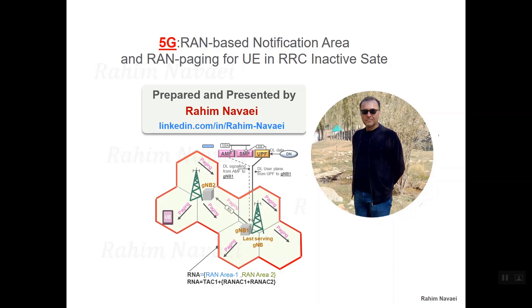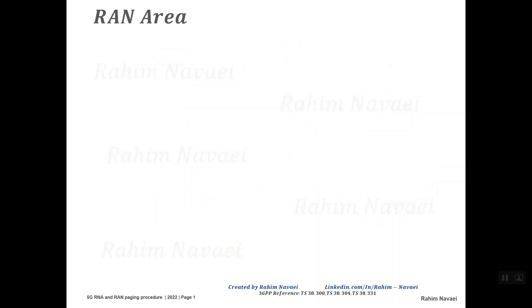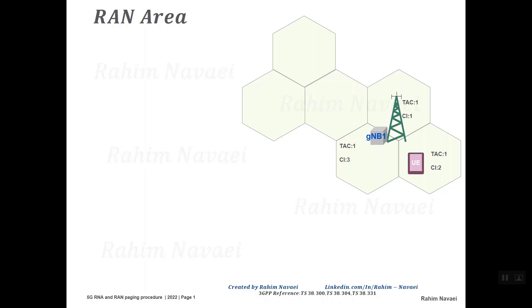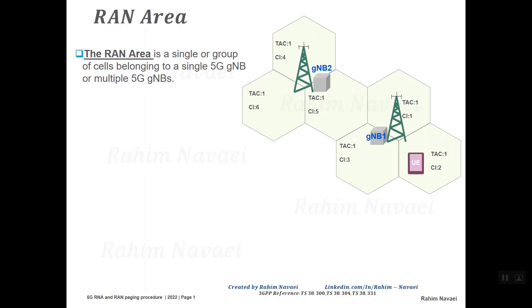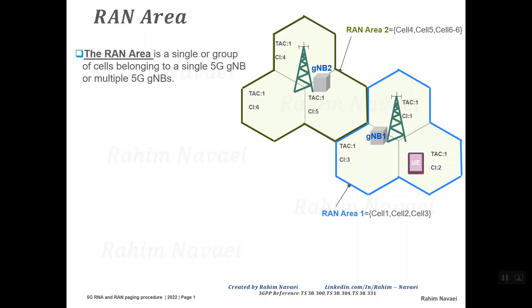First we'll see the RAN area concept. Here we have an area divided into six cells. Cell 1, cell 2, and cell 3 are controlled by gNB1; cell 4, cell 5, and cell 6 are controlled by gNB2. The RAN area is a single or group of cells belonging to a single or multiple 5G base stations. In this example we have two RAN areas: RAN area 1 consists of cell 1, cell 2, and cell 3; RAN area 2 consists of cell 4, cell 5, and cell 6.